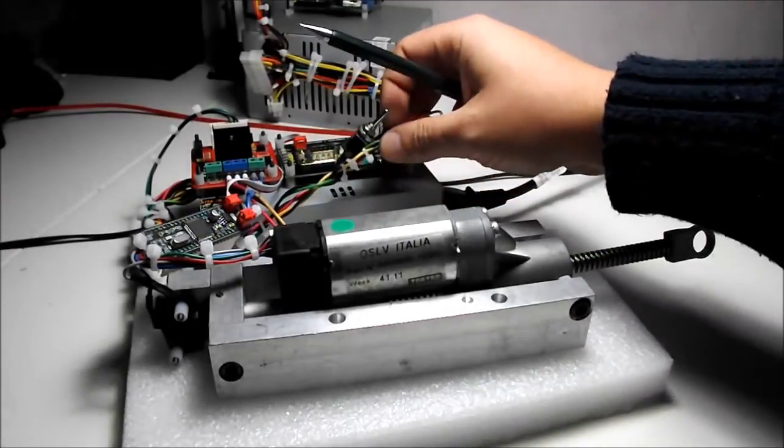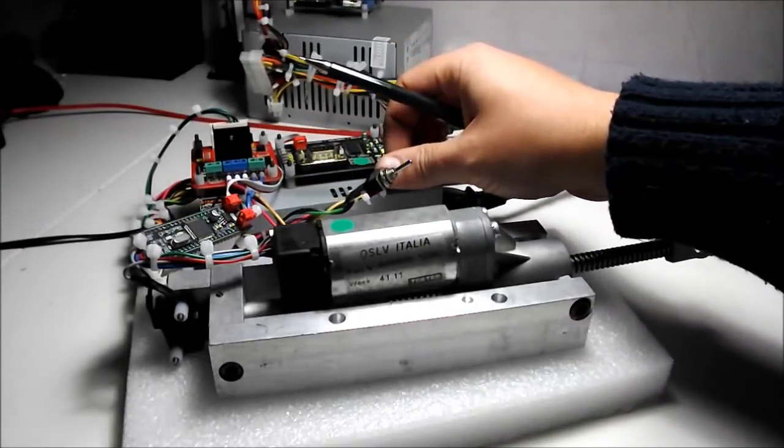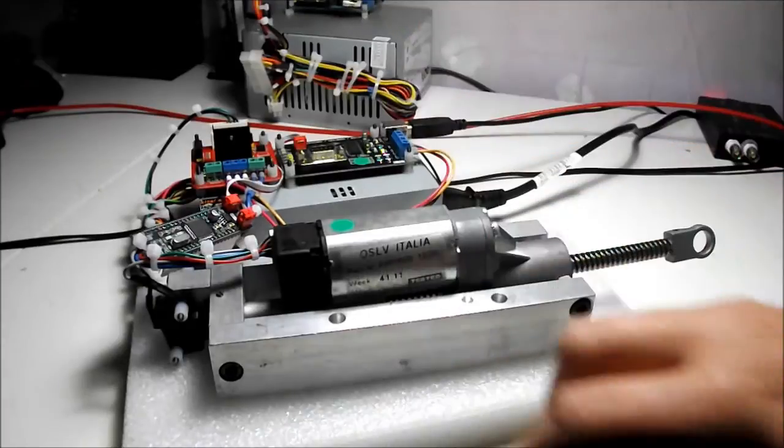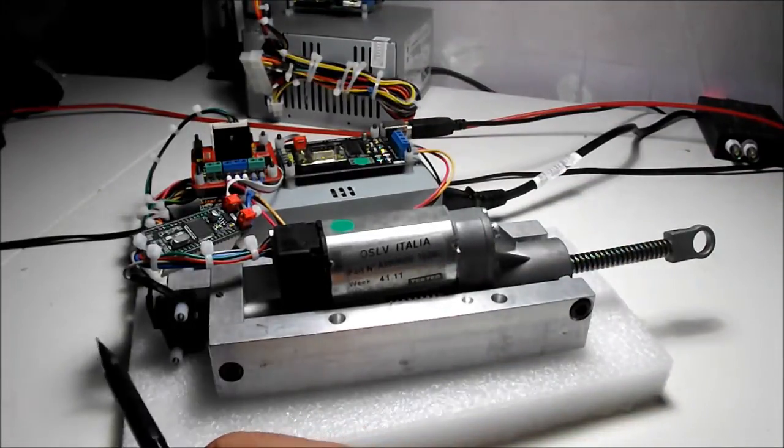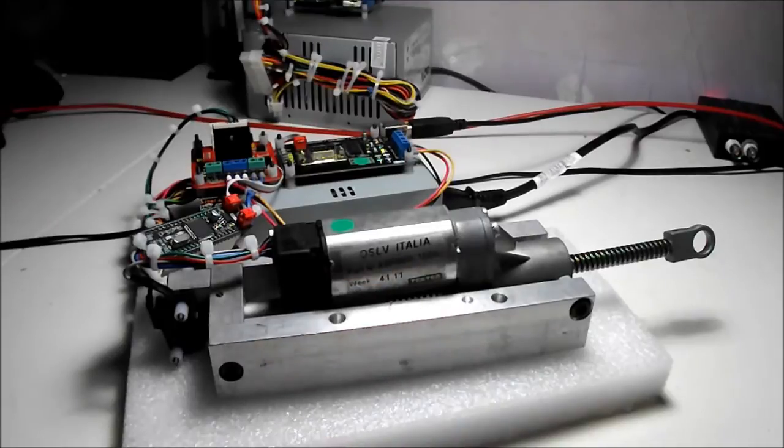We have here a small switch button that is for powering all the system. And we have here the end stop to detect the top of the shaft.